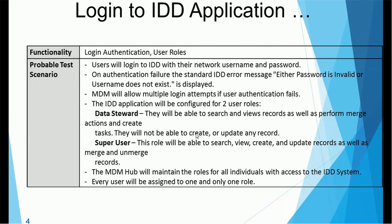During login, the user will log into IDD with their network username and password if LDAP or Active Directory (AD) network authentication has been configured in the MDM hub. On authentication failure, the standard IDD application error message will be something like: 'password is invalid' or 'username does not exist.' MDM will allow multiple login attempts if user authentication fails, though a limit can be set at the backend in the MDM configuration.